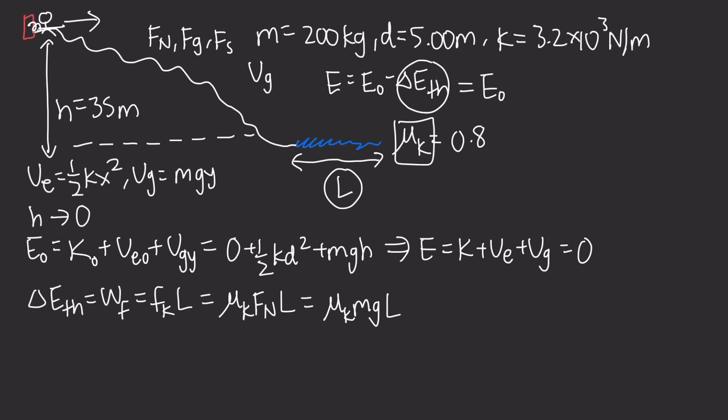Now that we have both of these expressions ready, we can plug them back into the initial equation and we see that mu k mg L equals one half k d squared plus mgh. This tells us that L equals k d squared over 2 mu k mg plus h over mu k. Just do some rearranging and you'll get the expression for L.